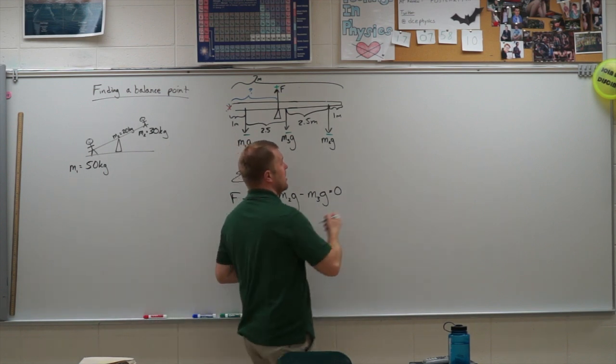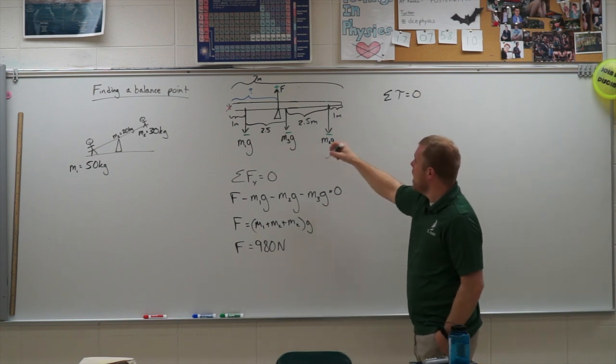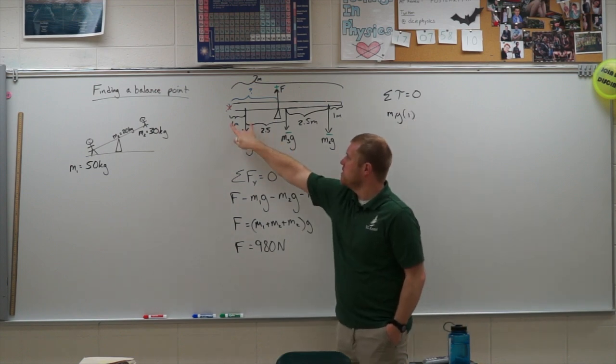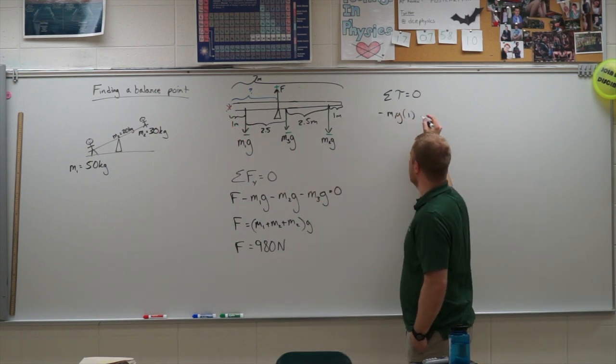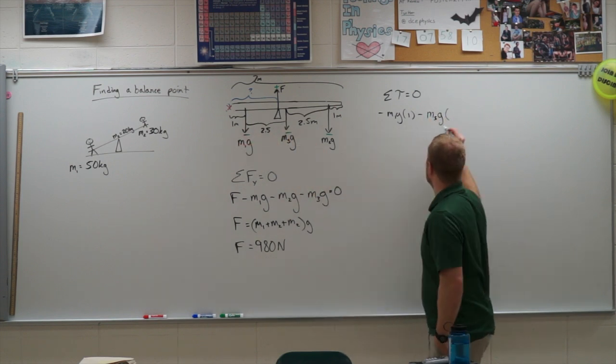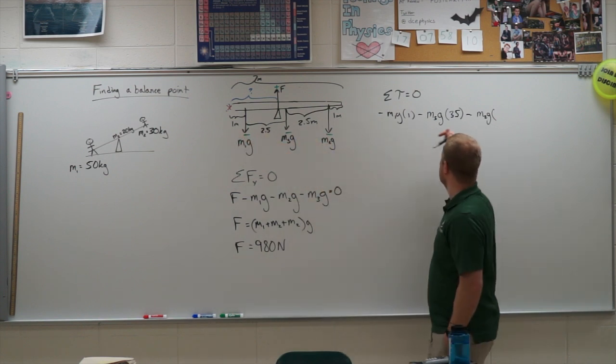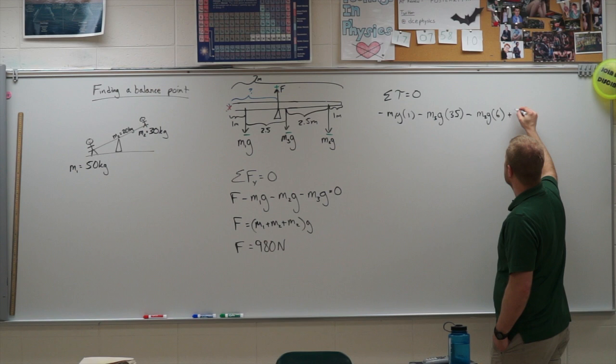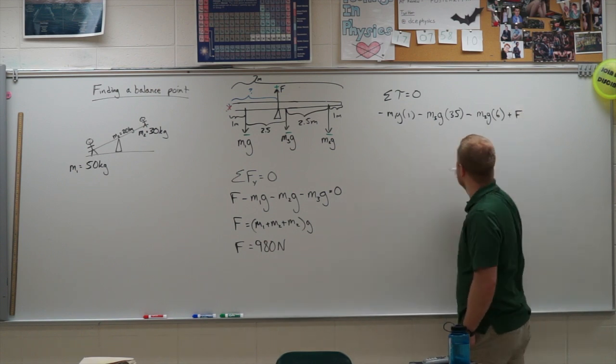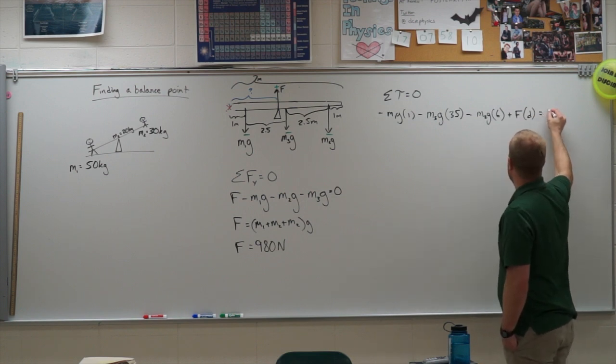So let's go ahead and generate that torque equation then. So the sum of the torques is equal to zero in our case here. I have M1G times how far away it is, one meter from the axis of rotation. And it's negative. Minus M3G times how far away it is from the end, 3.5 meters. And then minus M2G times how far away it is, which is 6 meters. And then plus that force, which is my 980 newtons, times how far away it is, which I don't know. I'm just going to call it D though. And all that adds up to zero.